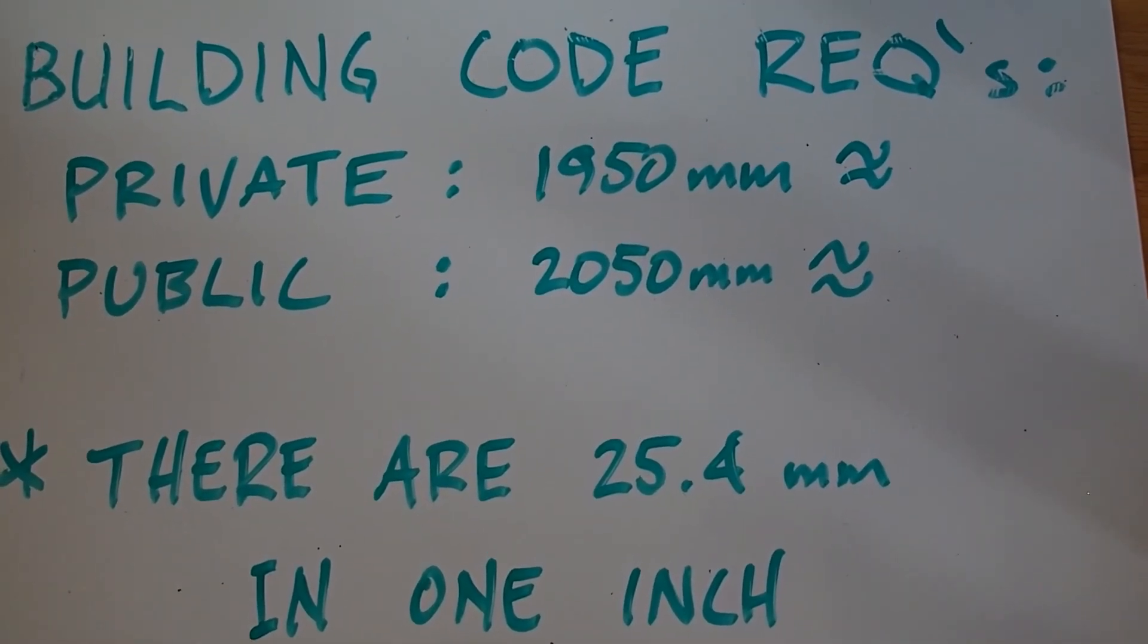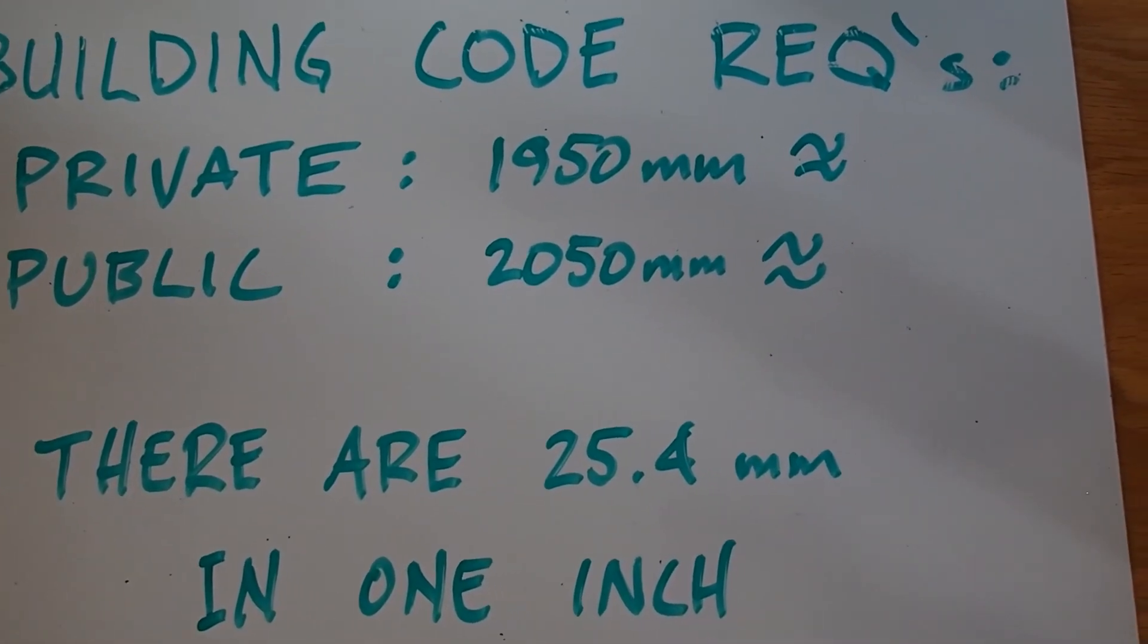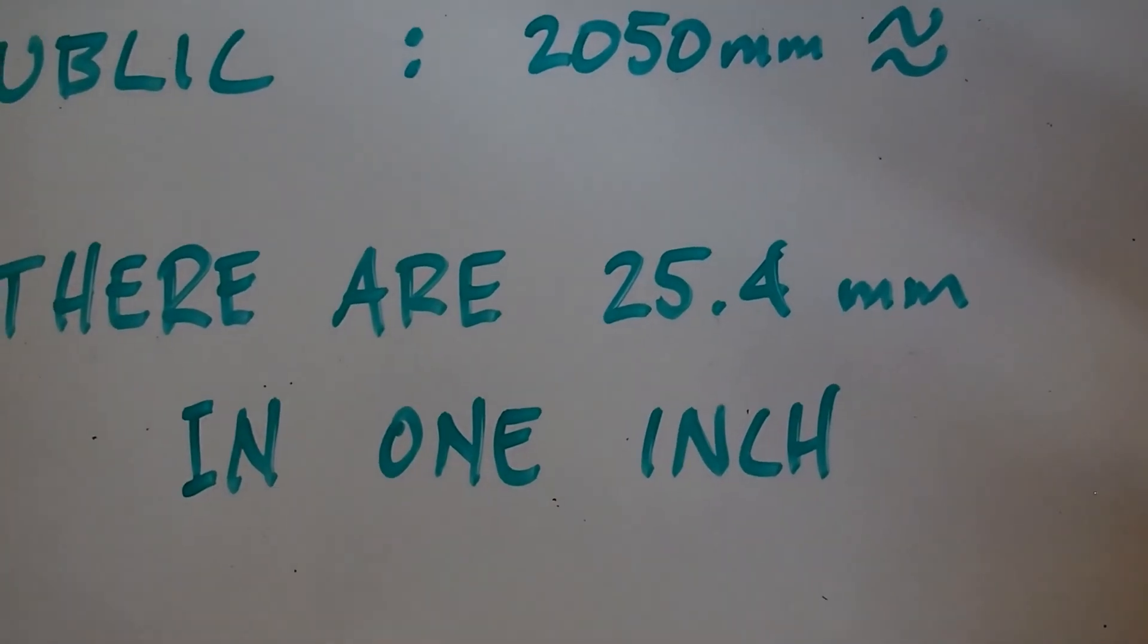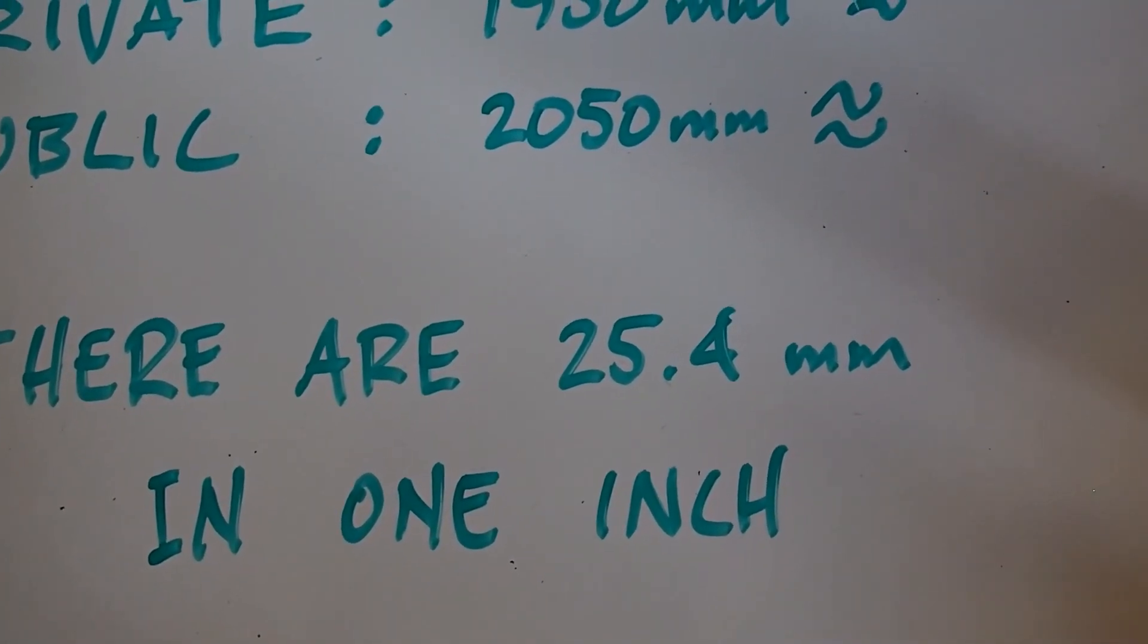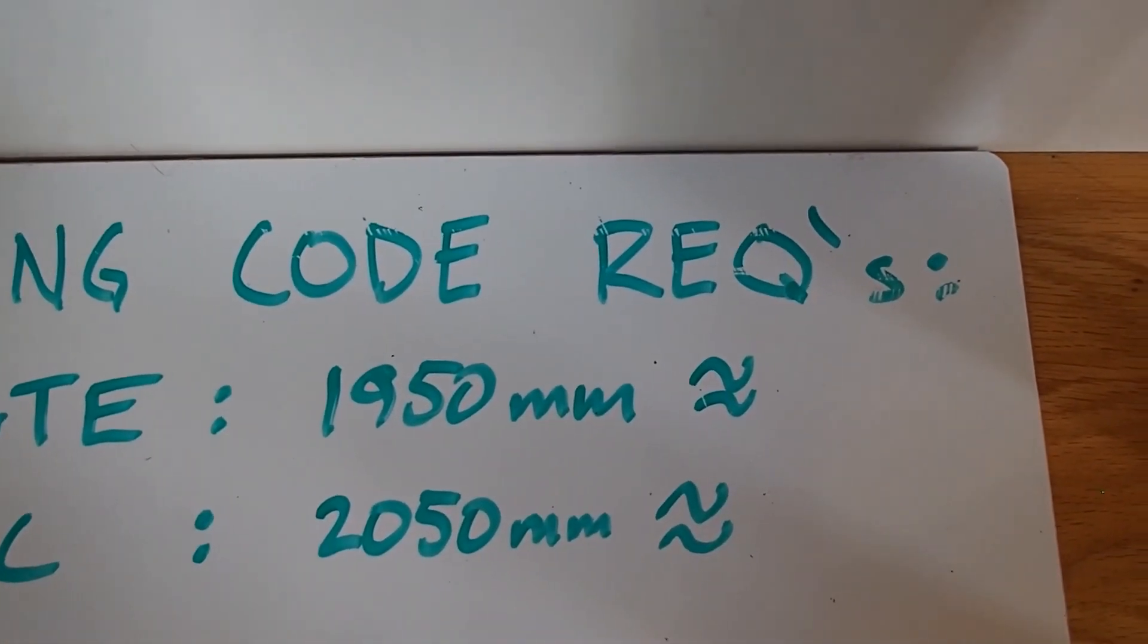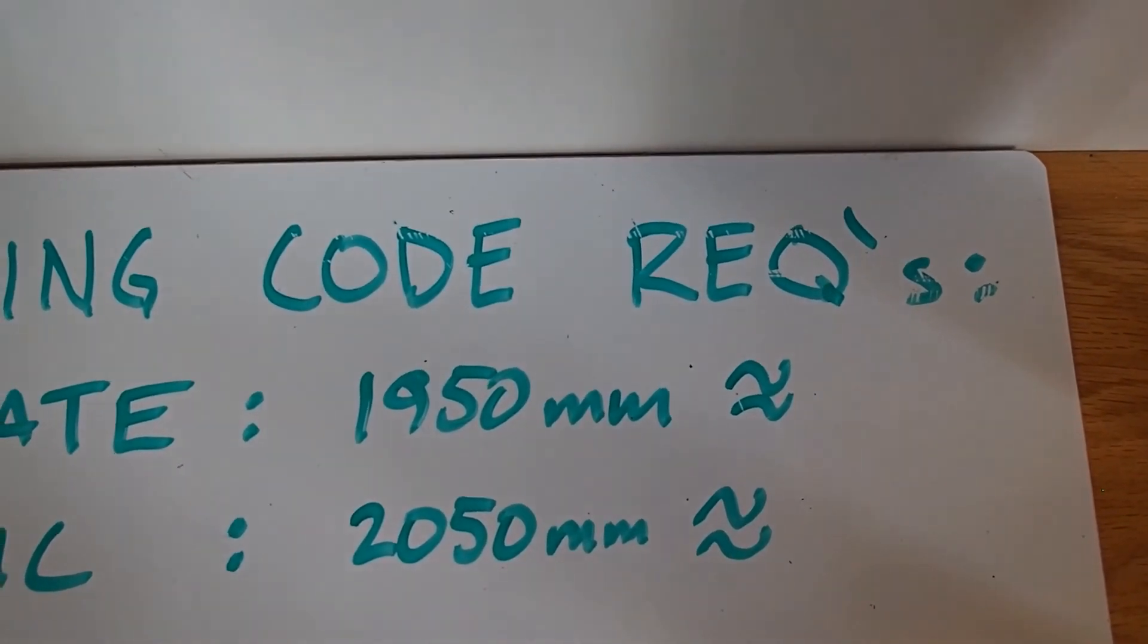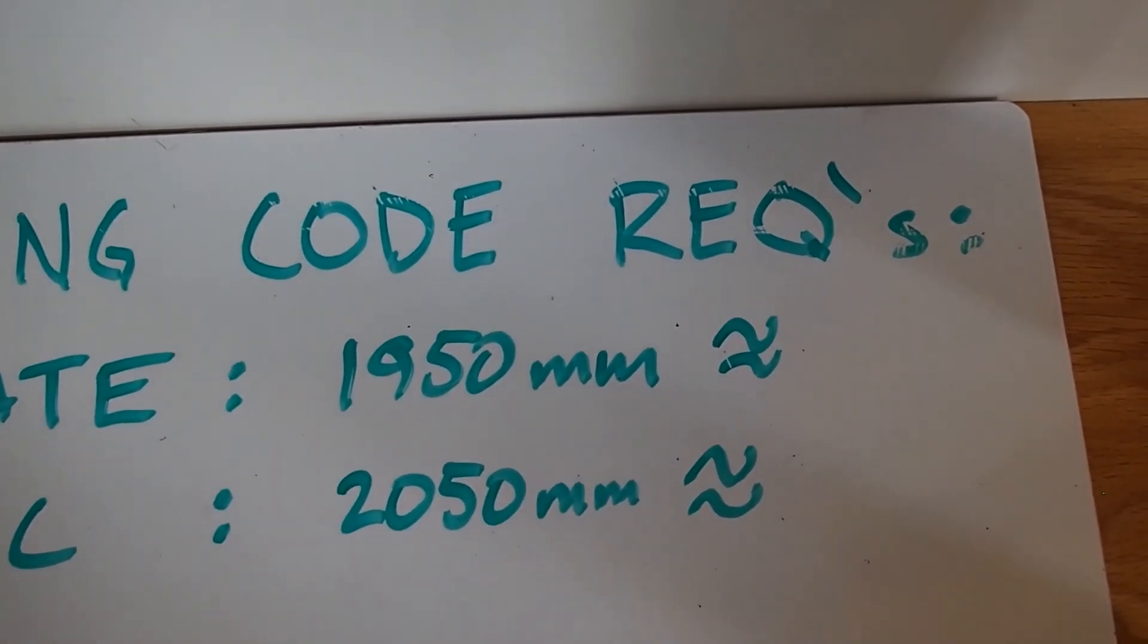Sometimes you're building in imperial. My floor frame thickness was in imperial. So sometimes you're going to have to use these numbers in imperial. To convert from the metric to the imperial, you need to remember that there are 25.4 millimeters in one inch. If I have 1950 millimeters, I take that number and divide it by 25.4 to get the equivalent in imperial.